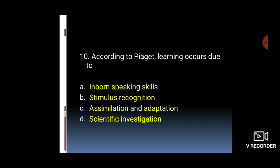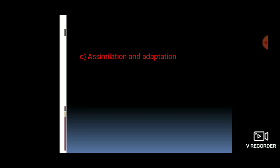The last question: according to Piaget, learning occurs due to — import speaking skills, stimulus recognition, assimilation and adaptation, or scientific investigation? According to Piaget's concept of learning and acquisition, the answer is assimilation and adaptation — the child adapts to the environment and learns accordingly. Thank you for watching Guru Knowledge channel; subscribe and click the bell icon for further updates.